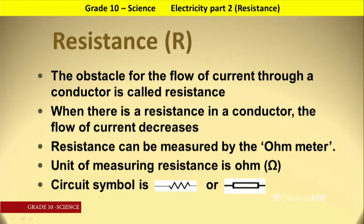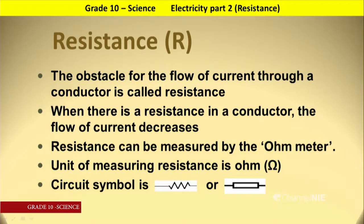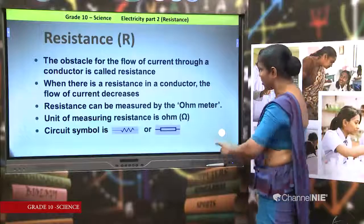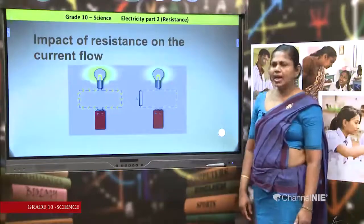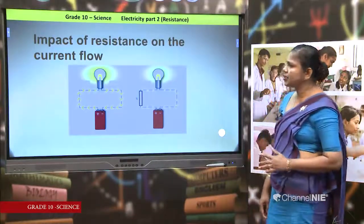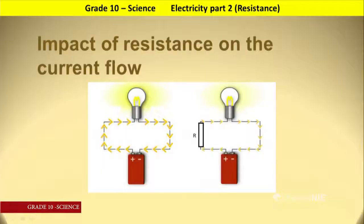The unit of measuring resistance is the ohm. The circuit symbols used to represent resistance in a circuit are shown here. Now look at these two circuits. In one circuit you can see a high current flows and the brightness of the bulb is very high. Both circuits use the same batteries.